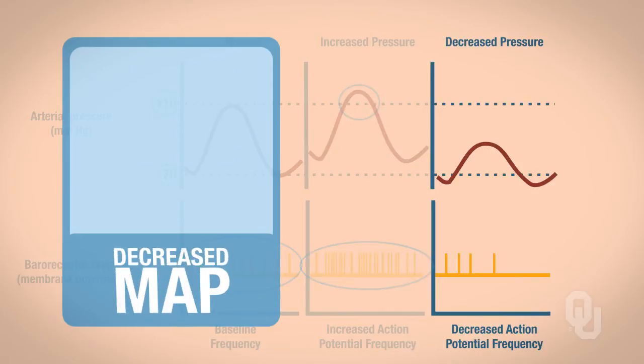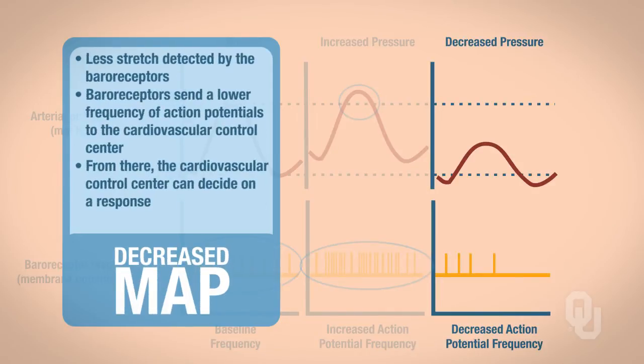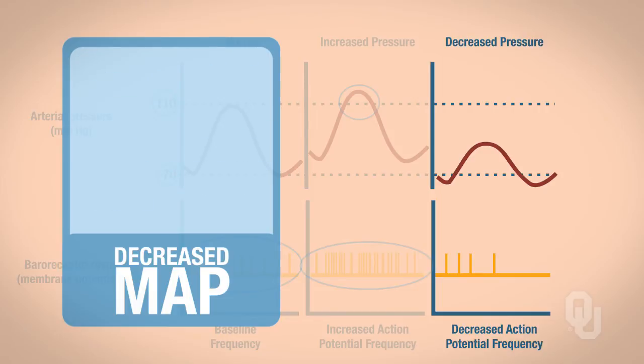If we have a low MAP, there is less stretch detected by the baroreceptors. Because there is less stretch, the baroreceptors send a lower frequency of action potentials to the cardiovascular control center, which then decides on a response. Let's look at what these responses are.